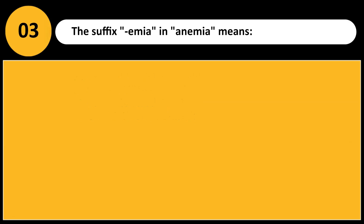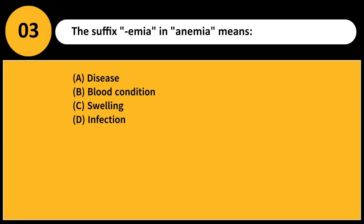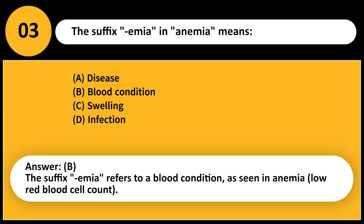The suffix -emia in anemia means: A. Disease B. Blood condition C. Swelling D. Infection. Answer: B. The suffix -emia refers to a blood condition, as seen in anemia — low red blood cell count.